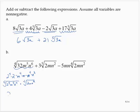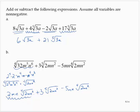That gives me 2mn times the fourth root of 2mn squared, plus 3 times the fifth root of 2mn squared, minus 5mn times the fourth root of 2mn squared. The fourth root terms are like radicals and can be combined: 2mn minus 5mn gives negative 3mn times the fourth root of 2mn squared, plus 3 times the fifth root of 2mn squared. Those are not like radicals because they do not share the same index.